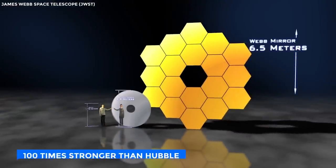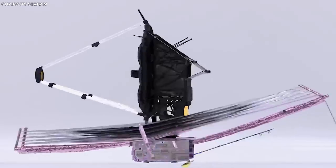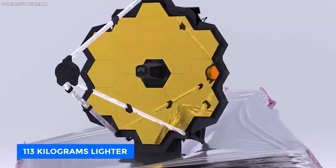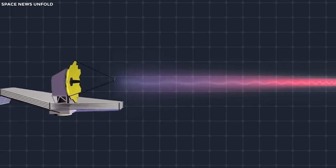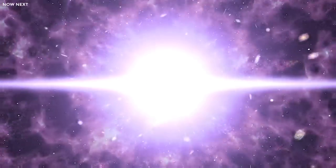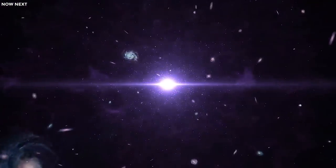With its powerful lens, it's 100 times stronger than Hubble, yet 113 kilograms lighter. It peers into the infrared spectrum, cutting through dust clouds and revealing stars being born.